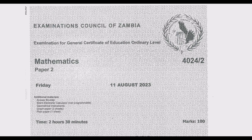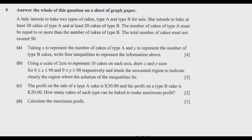Welcome viewers to the ninth episode in a series of 12 episodes focused on the August 2023 Mathematics Paper 2. If you haven't seen the other episodes, please go to our YouTube channel — you'll find all 12 episodes covering each question in detail. We've also done Paper 1 in detail; go to our YouTube channel and find the playlist with detailed solutions to all 23 questions from the August 2023 Mathematics Paper 1.